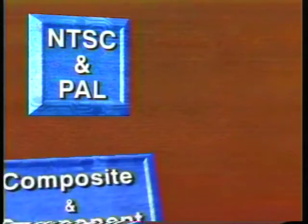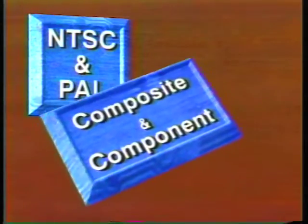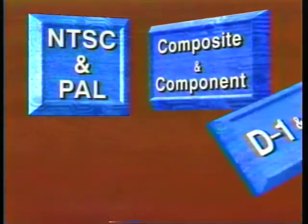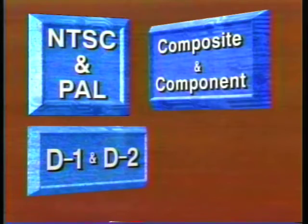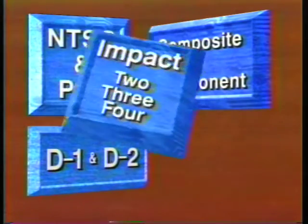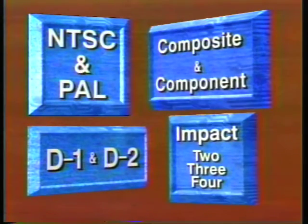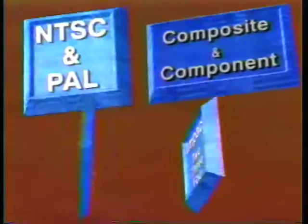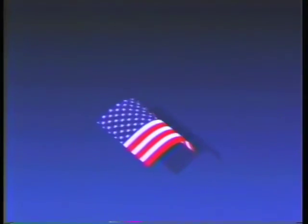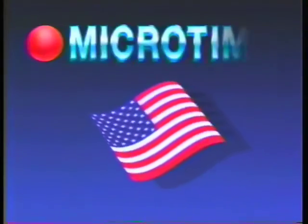The new-look Impact comes in various models: two standards — NTSC and PAL; two analog versions — composite and component; two digital versions — D1 and D2; and three models, two of which are upgradable. All models can receive the Shape of the Month Club upgrade, so the value of Impact is constantly growing.